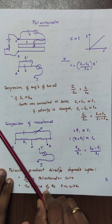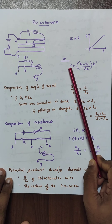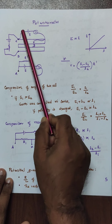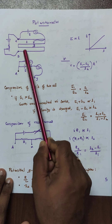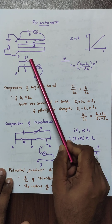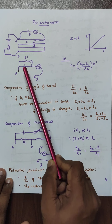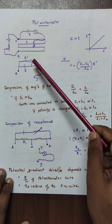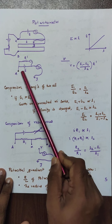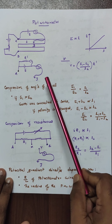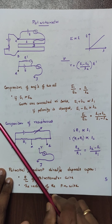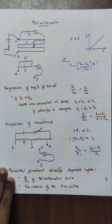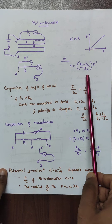To find the internal resistance of a cell, you connect the cell in the circuit from point A with an external resistance R dash with the key. First, in open circuit, we introduce the EMF cell, which gives the value of EMF — so E proportional to L1. In the second case, we insert the key and measure the terminal potential difference, with balance length L2. So E proportional to L1 and V proportional to L2. By solving, the internal resistance of the cell equals L1 minus L2 by L2, into R dash.